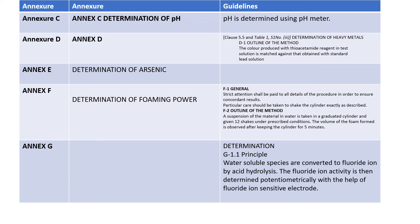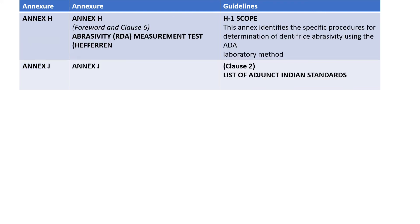Annexure E comprises determination of arsenic and can include determination of foaming power capacity, which has to be determined in the case of toothpaste. Annexure G comprises fluoride activity analysis in case of fluoridated Type 2 toothpaste. Annexure H comprises the very important abrasivity measurement test, which identifies specific procedures for the determination of dentifrice abrasivity using laboratory methods. It also comprises a list of adjunct Indian Standards associated with toothpaste.